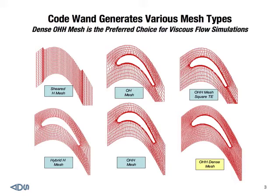The top center mesh is a step improvement over the hybrid H mesh. The improvement involves adding an O mesh around the airfoil so you can capture the leading edge and trailing edge more accurately, and remove the singularity at the leading edge associated with the H mesh. This OH mesh is pretty much today's industry standard.